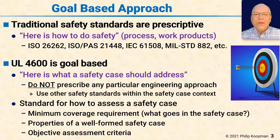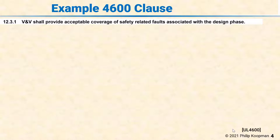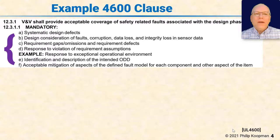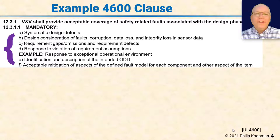Let's look at a piece of the 4600 standard. Clause 12.3.1 covers verification and validation of faults related to the design phase. It states: VNV shall provide acceptable coverage of safety-related faults associated with the design phase. Your safety case has to talk about faults related to the design and how you're going to verify and validate that they are not existent or have been mitigated. Within each clause are mandatory prompt elements — for instance, 12.3.1.1A addresses systematic design defects. It doesn't tell you what to do; it tells you your safety case has to have somehow addressed that topic.